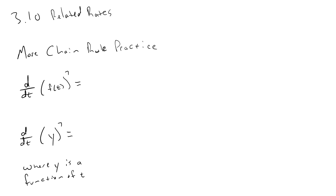Let's start with a little more practice with the chain rule. When we learned the chain rule and implicit differentiation, we saw that the derivative of a function raised to the seventh power is really an extension of the power rule. The derivative would be seven times that inside function to the sixth power, multiplied by the derivative of that inside function — sometimes written as f prime.